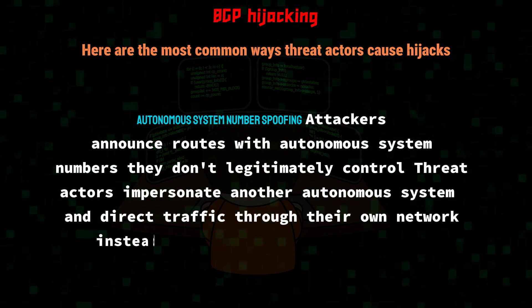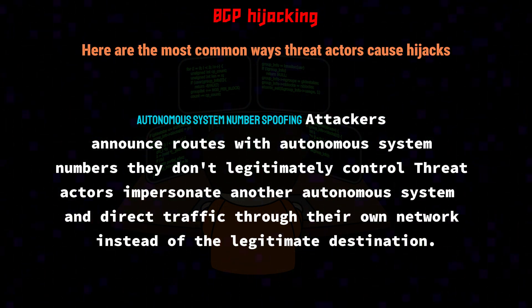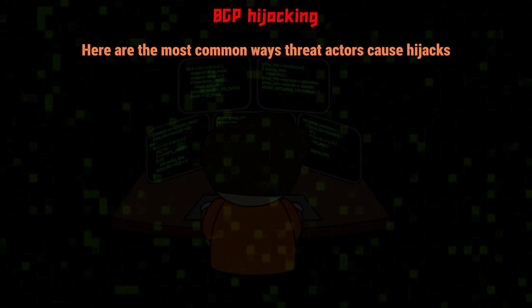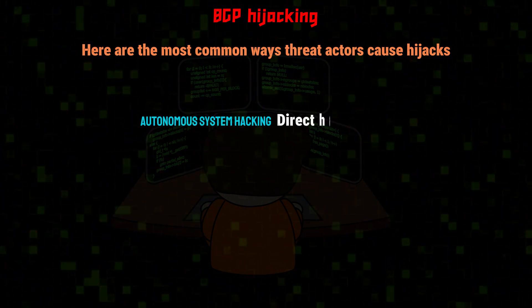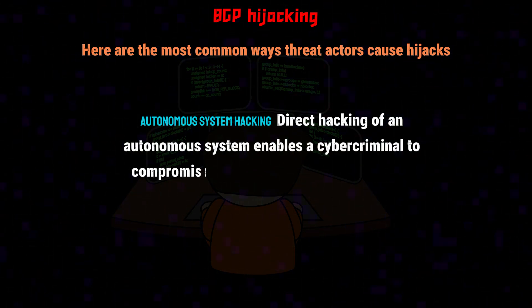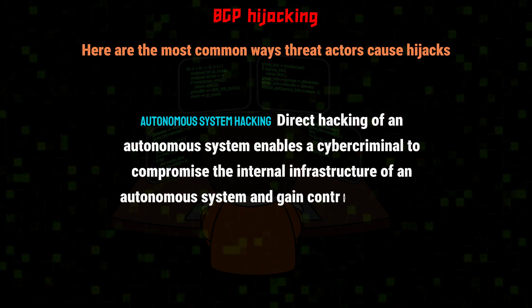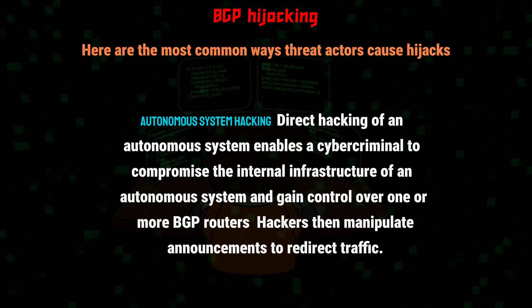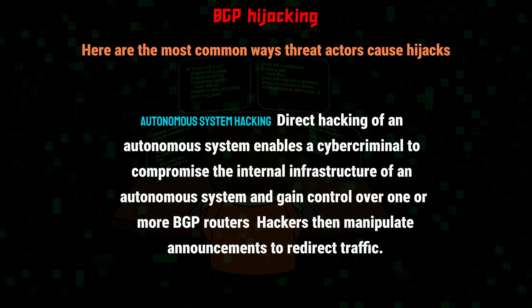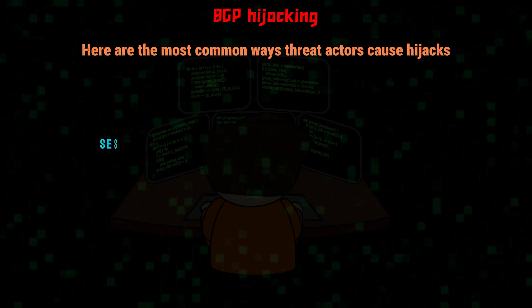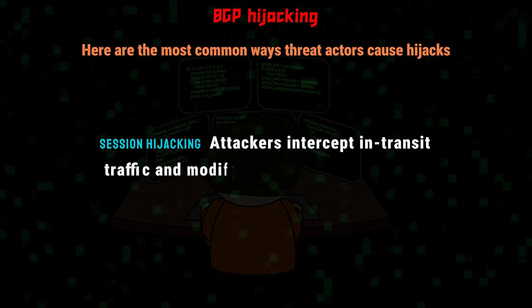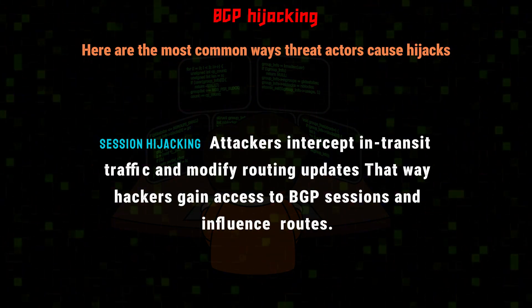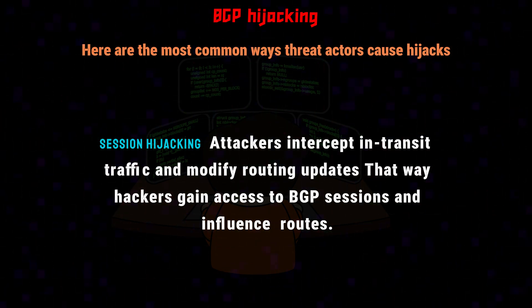Autonomous System Number Spoofing: attackers announce routes with Autonomous System Numbers they don't legitimately control, impersonating another autonomous system and directing traffic through their own network instead of the legitimate destination. Autonomous System Hacking: direct hacking of an autonomous system enables a cybercriminal to compromise the internal infrastructure of an autonomous system and gain control over one or more BGP routers. Hackers then manipulate announcements to redirect traffic. Session Hijacking: attackers intercept in-transit traffic and modify routing updates, gaining access to BGP sessions and influencing routes.